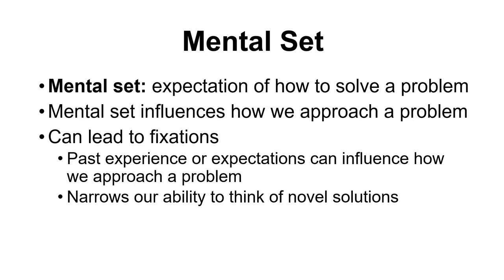That mental set gave us an expectation of how we should solve the problem and influenced how we approached Problem B — the first problem created that expectation, which limited how we approached the second. In experiments like this, researchers find that participants who do set A first and then set B fall prey to that mental set, just like our example. But those who do B first and then A don't have the same problem — they find the simpler solution in set B first and aren't restricted when they approach set A.